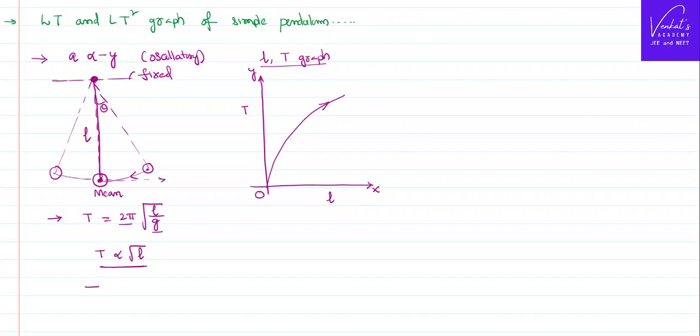If you square this relation, T² is directly proportional to L, as the root will go. Or L is directly proportional to T². Thus, we can draw another graph called L-T² graph.